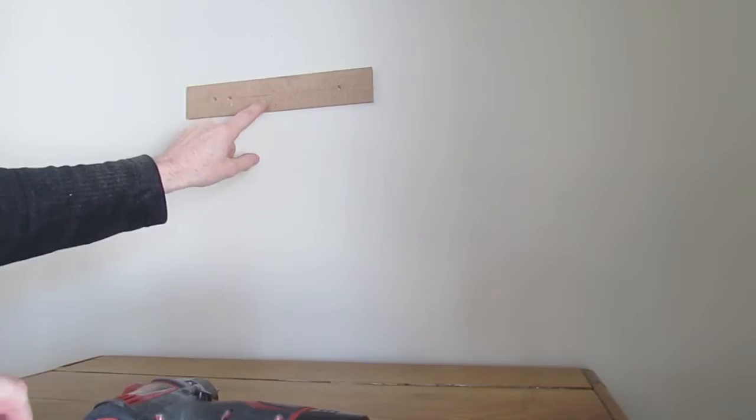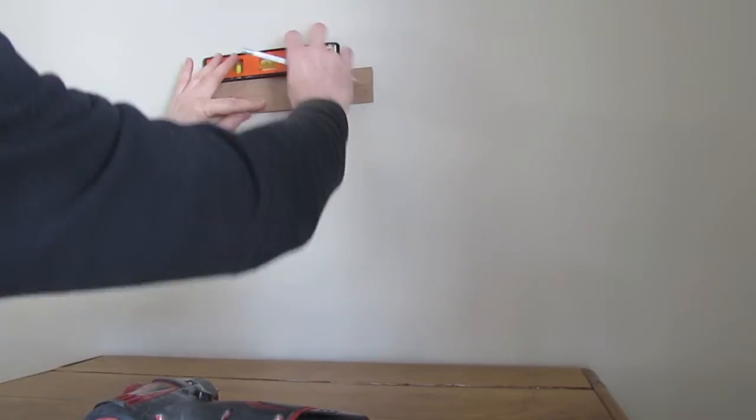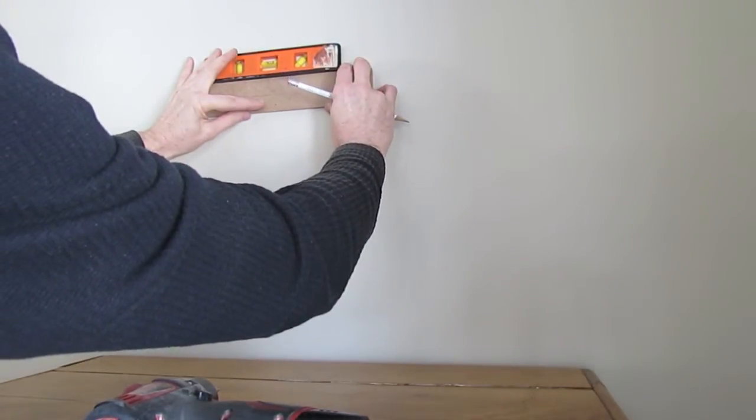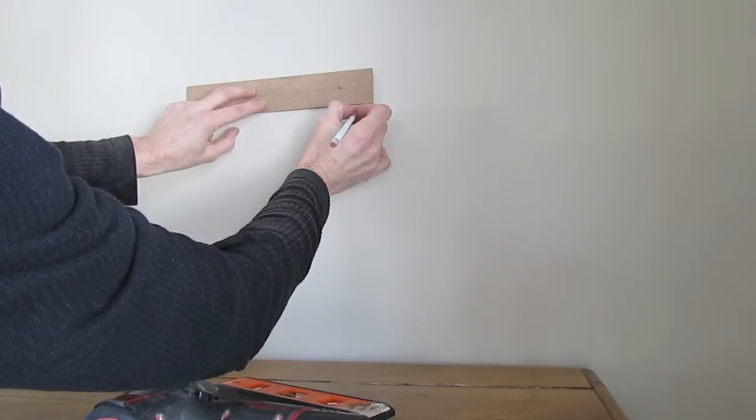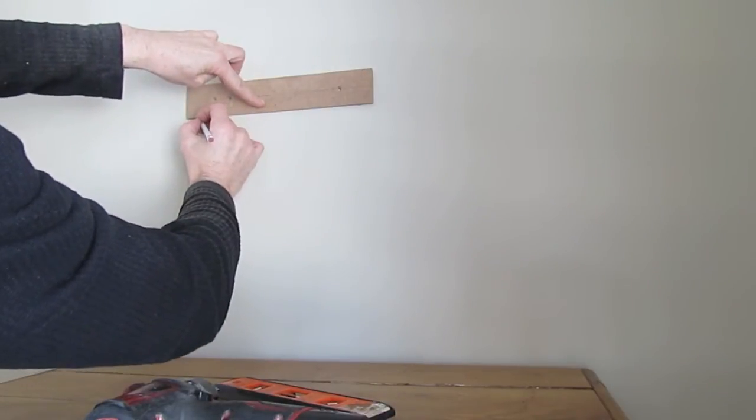When you have a spot picked on the wall, put it on the wall and use a level and make sure that the French cleat is nice and level, and make a small pencil mark so you know exactly where it goes.